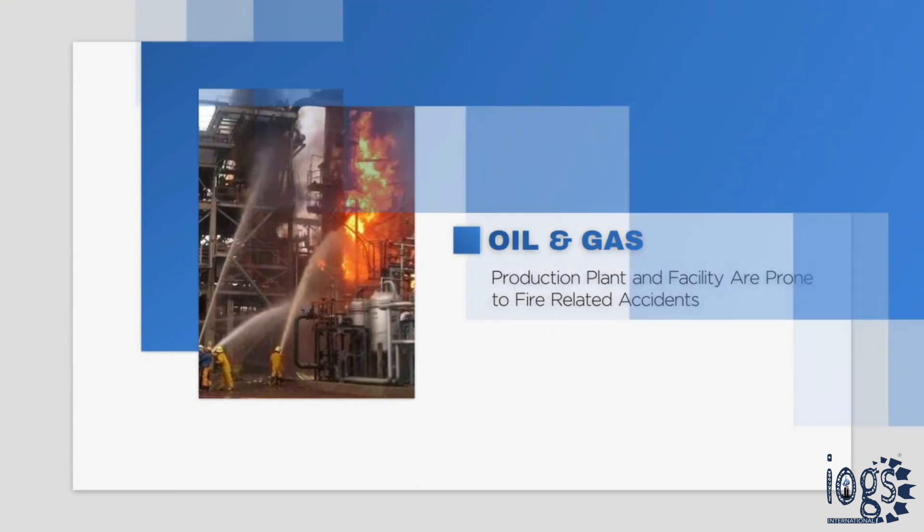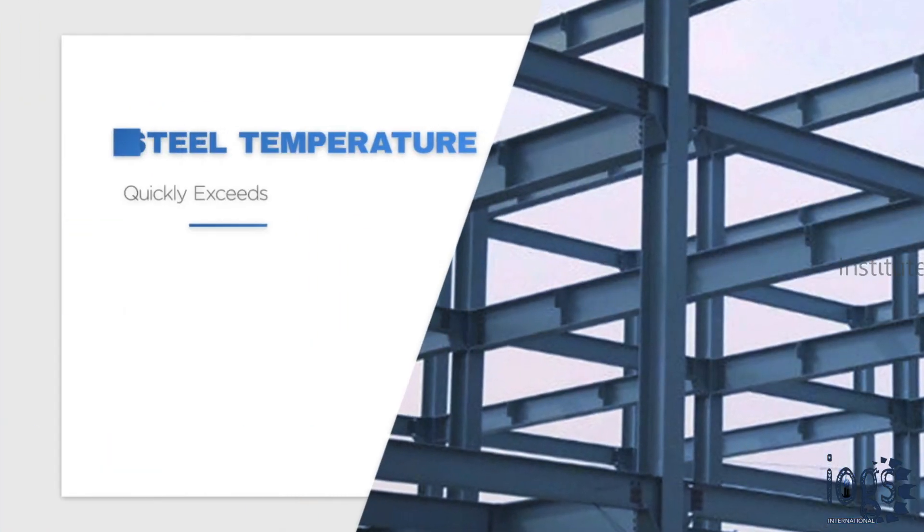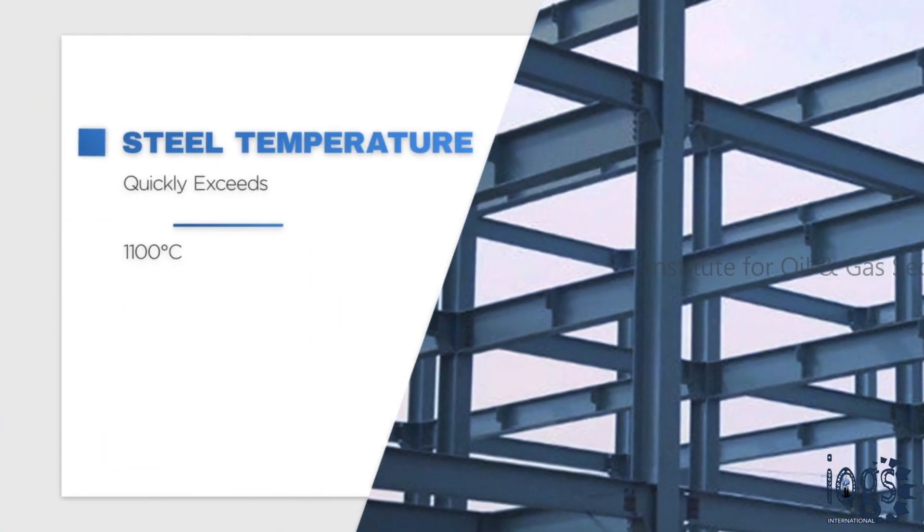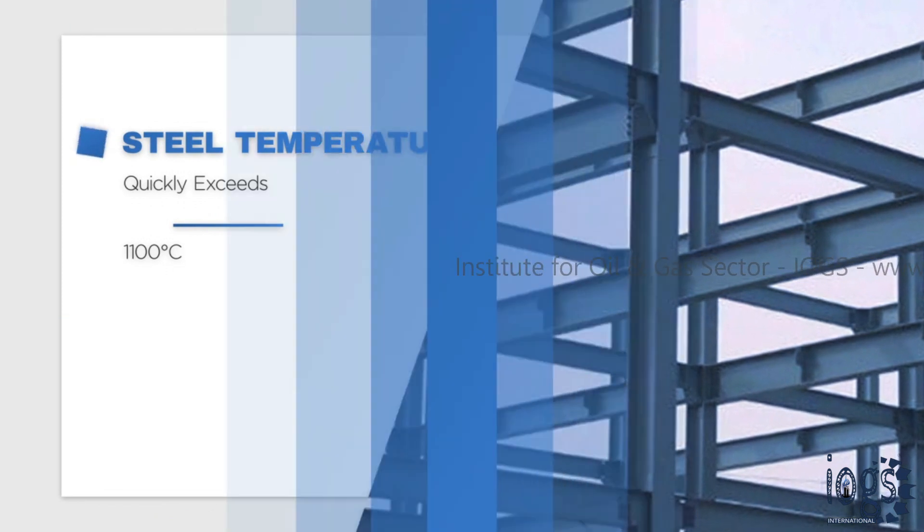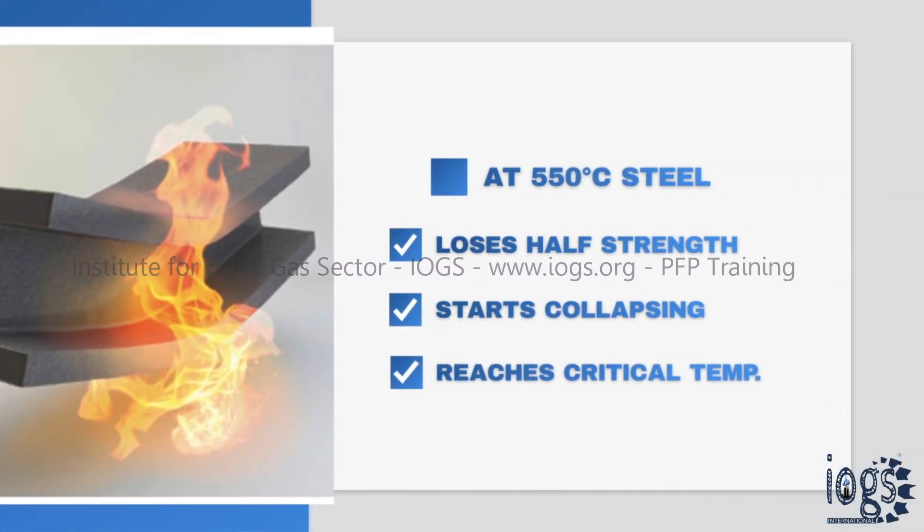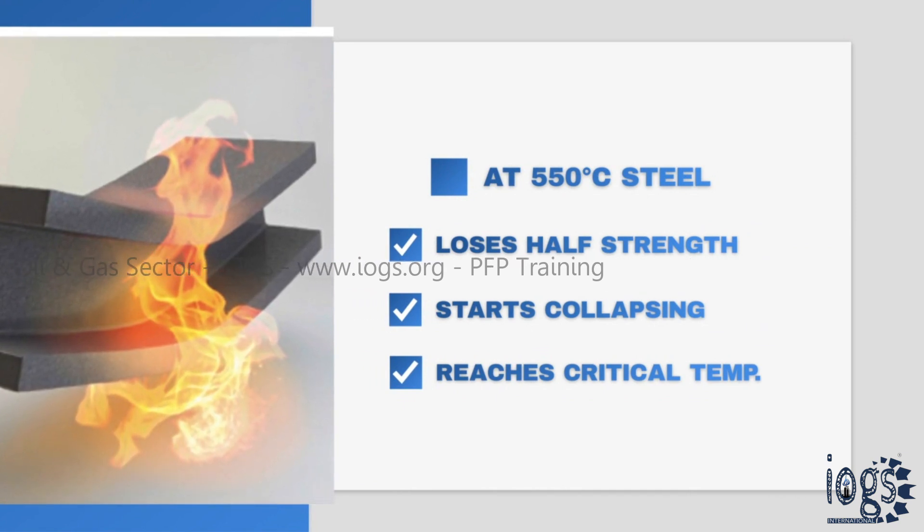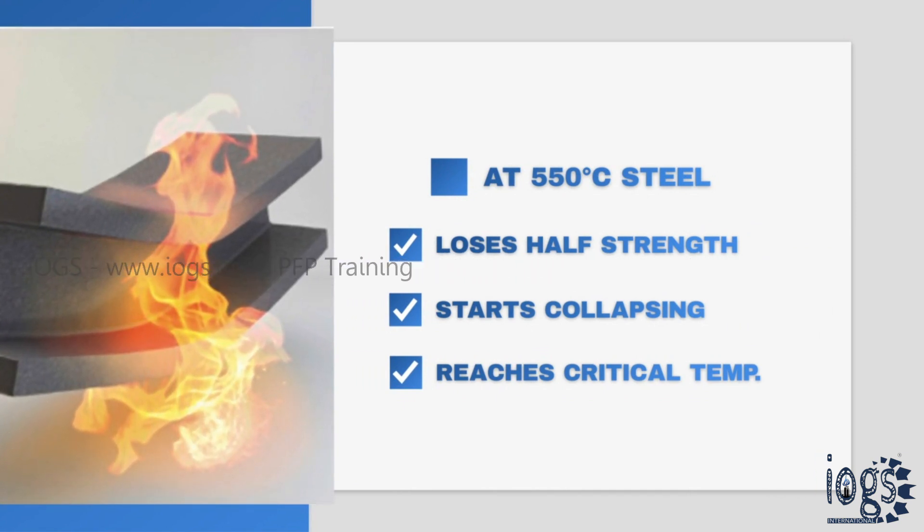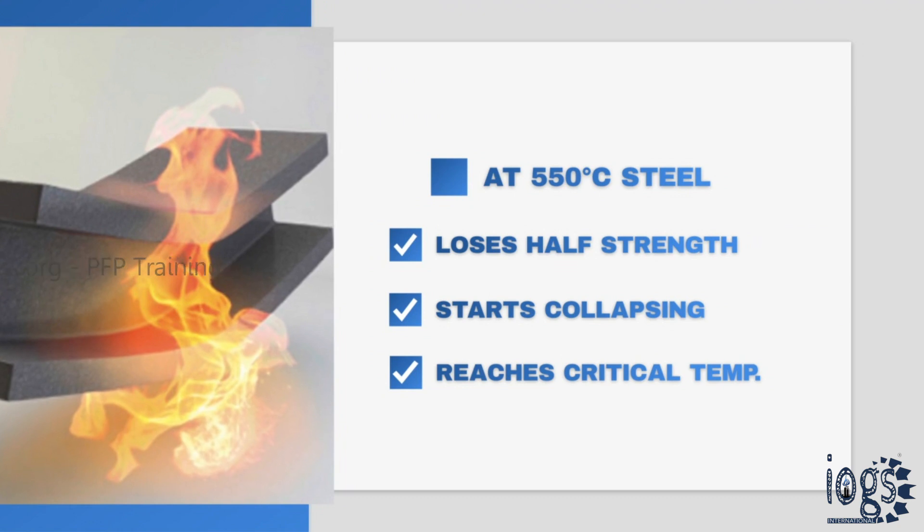In the case of a fire incident in a steel-made facility, the temperature can be as high as over 1,100 degrees Celsius. When the temperature gets to 550 degrees Celsius, about half of the original strength of steel is lost. It is at this critical temperature that load-bearing steel starts to collapse.